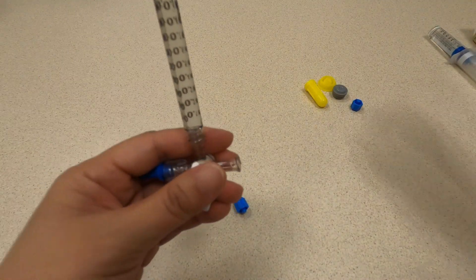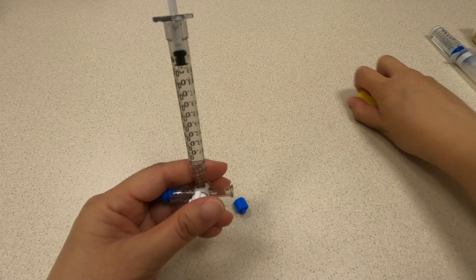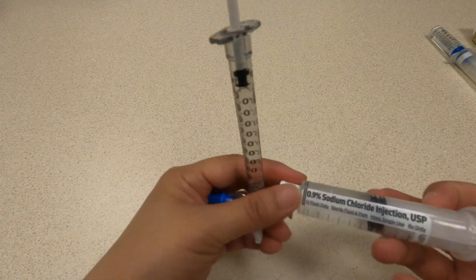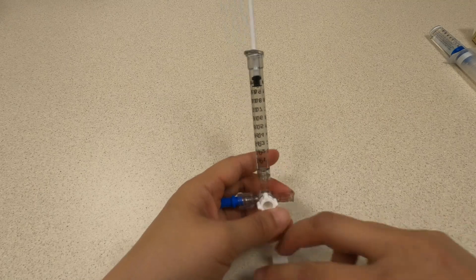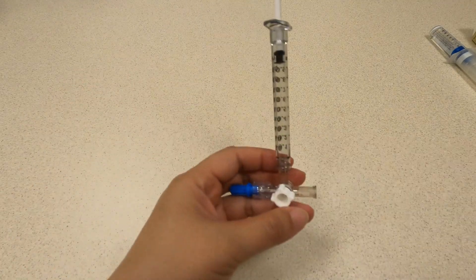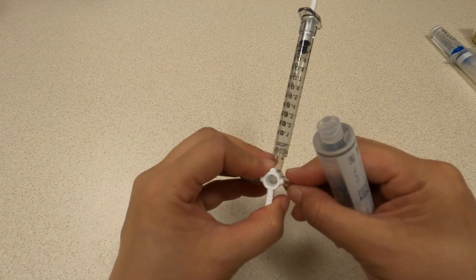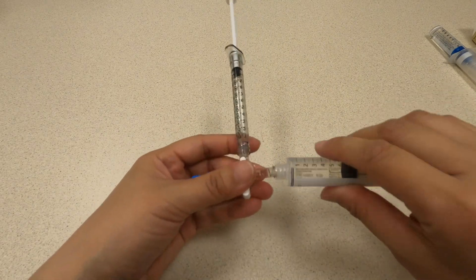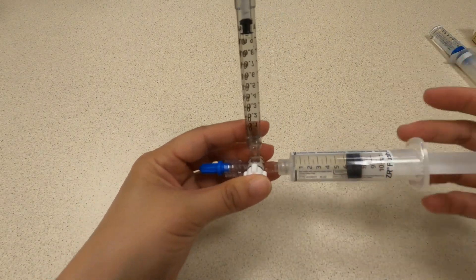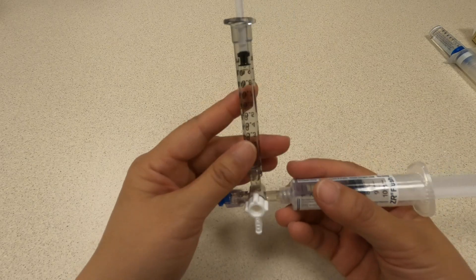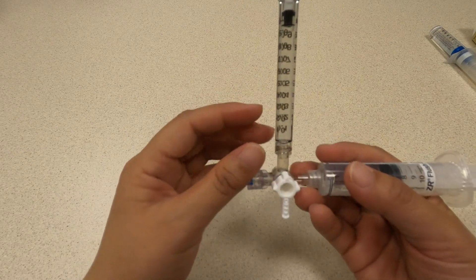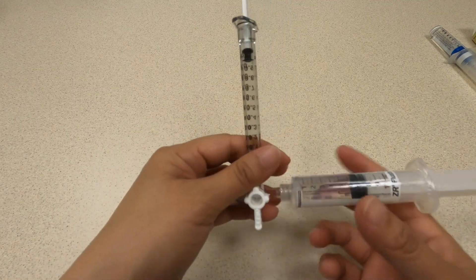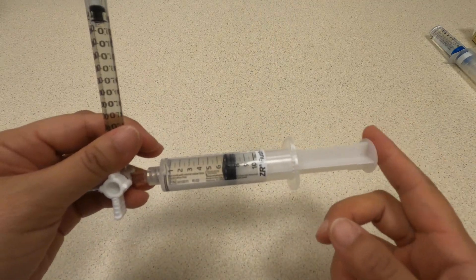For giving adenosine, adenosine is recommended to be given through rapid administration using the stopcock. You're going to attach this. You're going to give the adenosine by pushing quickly on here and then pushing quickly followed by this.